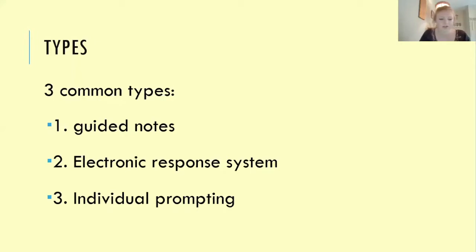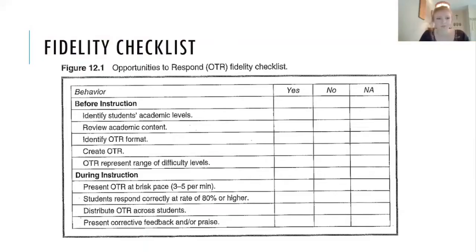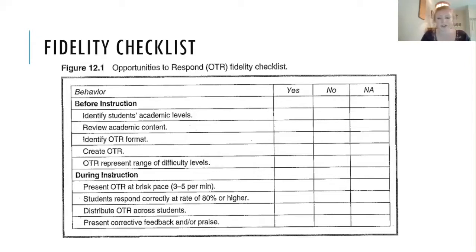The third type is individual prompting, where the teacher asks a question, identifies the specific student being asked, the student gives a response, and then the teacher reinforces. This practice has been evaluated through a fidelity checklist, which from my understanding is what was used across all practices in the article to decide whether or not the practice is effective.